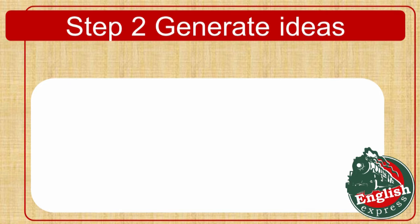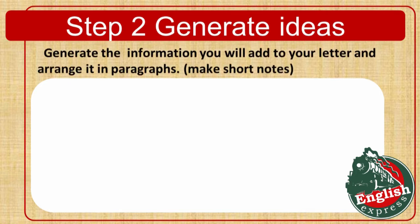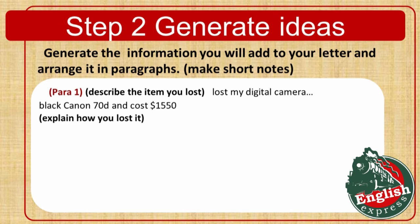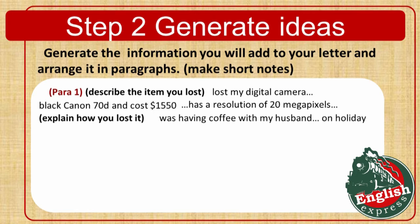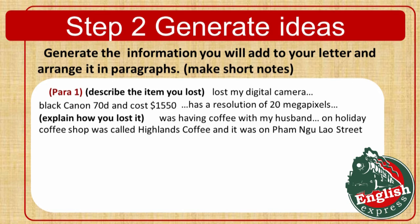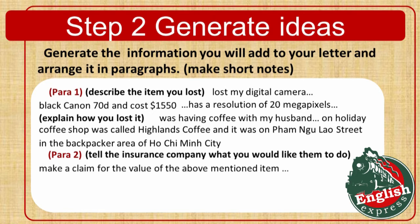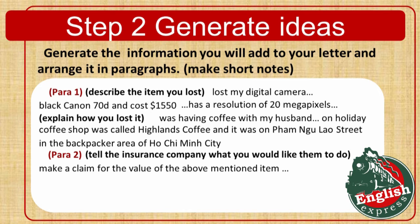The second step you need to take is generate the content of your letter. You can take a pencil and make short notes right on the worksheet with the task. In the first paragraph, we'll describe the item we lost and explain how we lost it. I lost my digital camera – it was a black Canon, it cost $1,550 and had a resolution of 20 megapixels. Explain how you lost it: I was having coffee with my husband on holiday. The coffee shop was called Highlands Coffee, it was on Fangulao Street in the backpacker area of Ho Chi Minh City. In the second paragraph, we are going to tell the insurance company what we want them to do – we want to make a claim for the value of our camera. Please use simple ideas that come first to your mind. Don't overthink it and waste your time.